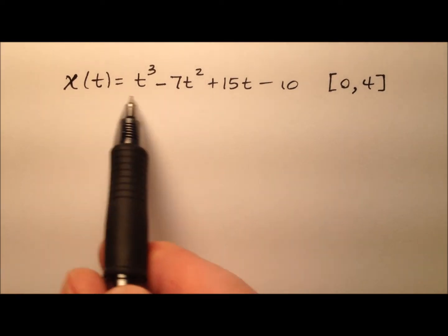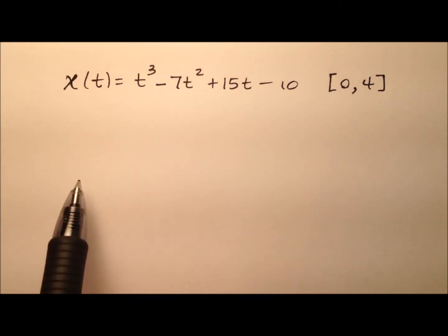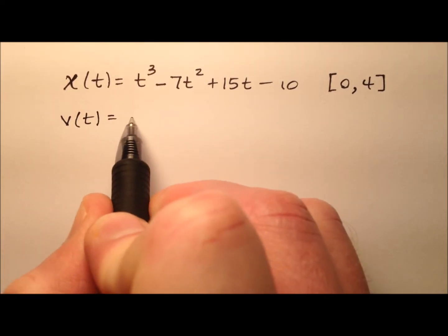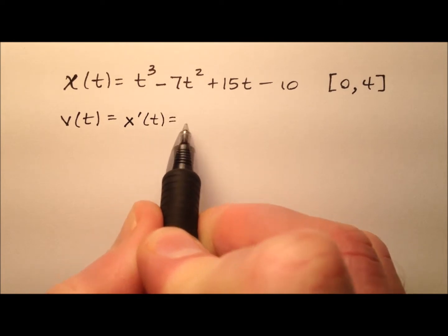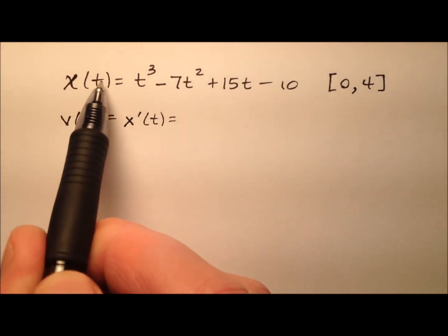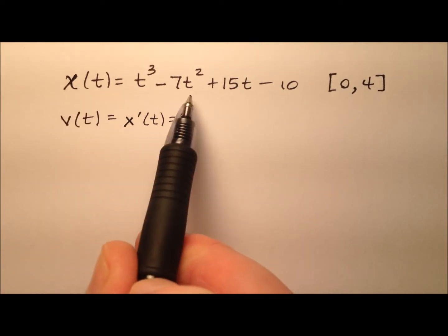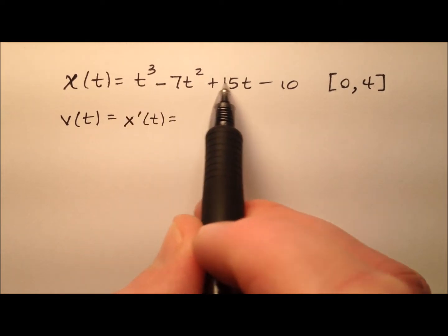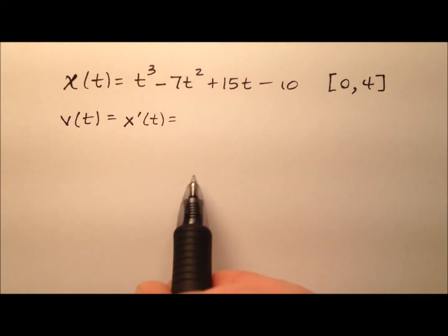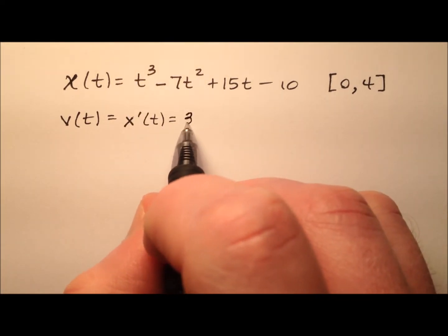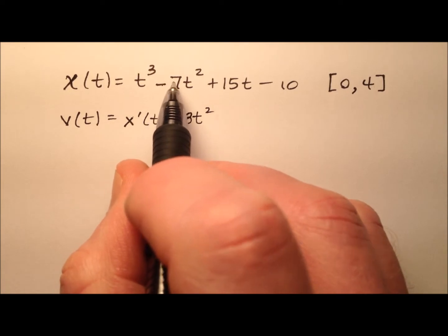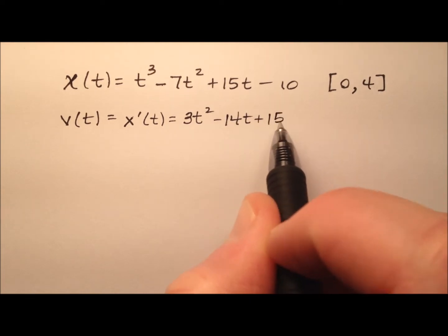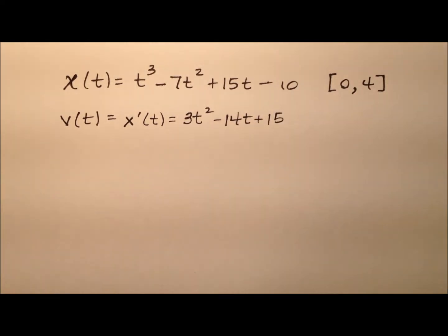Now let's find functions for velocity and acceleration. Our velocity function v of t can be found by differentiating our position function x of t. Going term by term through the polynomial: the derivative of t cubed is 3t squared, negative 7t squared goes to negative 14t, and positive 15t goes to plus 15. The derivative of a constant is just 0.